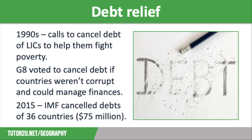During the 1990s, many people in the UK and other HICs started to voice their anger over the debt crisis and protested against the major banks who were making billions of pounds of profit each year but were still forcing LICs to repay their loans, along with the huge amount of interest that had built up, and this was stopping them from fighting poverty. Throughout the decade, there were calls to cancel the debts of the world's poorest countries.